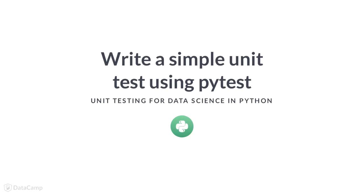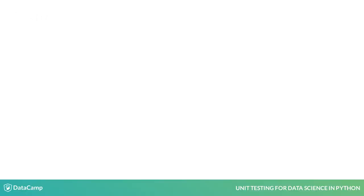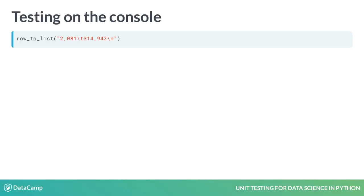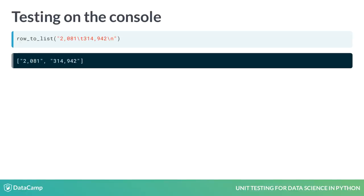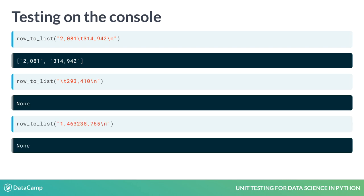In the last exercise, you went through a function's lifecycle. At every step, you tested it by calling rowToList on different arguments and checked if the return values are correct. This was repetitive, tedious, and time-consuming. In this lesson, we will learn to write unit tests and improve this process.